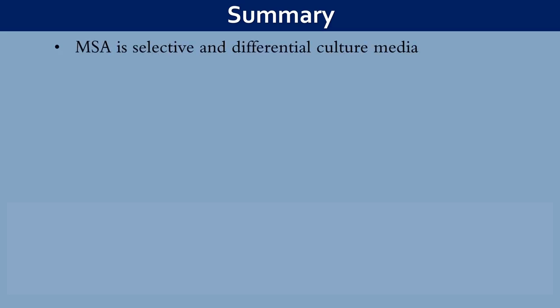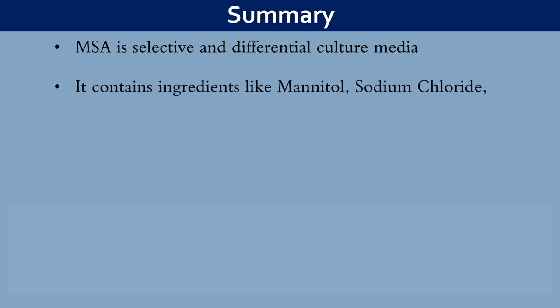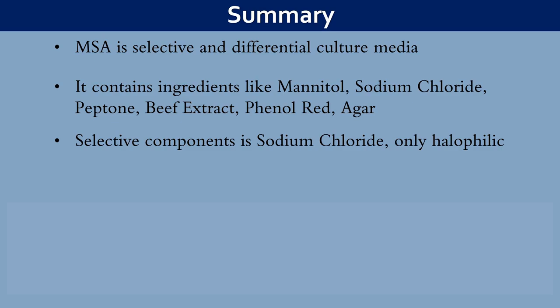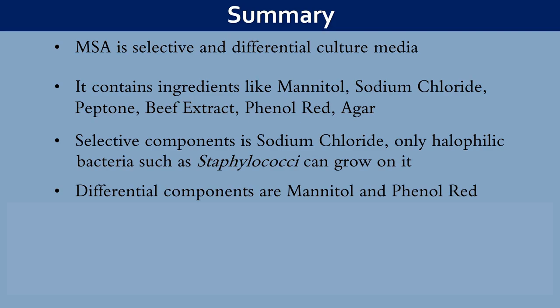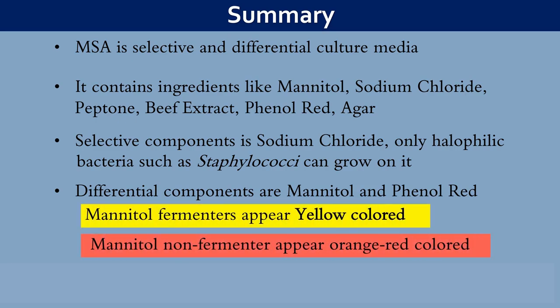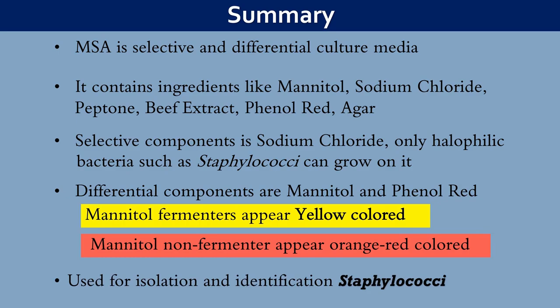Friends, now let us summarize what we learned so far about mannitol salt agar. MSA is a selective and differential culture media. It contains ingredients like mannitol, sodium chloride, peptone, beef extract, phenol red, and agar. The selective component in MSA is sodium chloride; therefore, only halophilic bacteria such as Staphylococci can grow on it. The differential components are mannitol and phenol red. Mannitol fermenter bacteria appear yellow colored. Mannitol non-fermenter bacteria appear orange-red colored. MSA agar is mainly used for isolation and identification of Staphylococci.